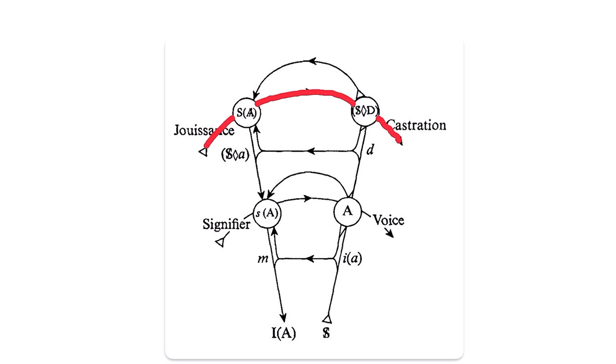Considering the voice is what supports the signifier to give rise to speech, we can infer perhaps that castration is the vehicle by which one can attain some form of indirect enjoyment. The commencement of the horizontal line, where the notion of jouissance comes to light, denotes, I think,